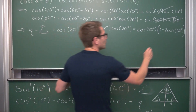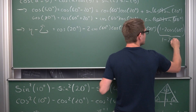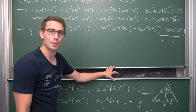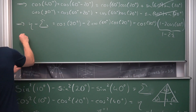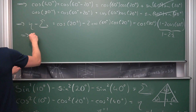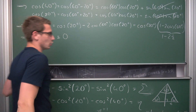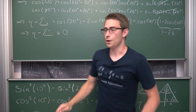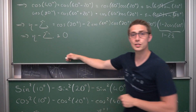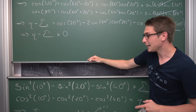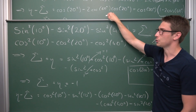Plugging cosine of 60 degrees equals one half into our expression gives one minus two times one half, which is one minus one equals zero. This means eta minus sigma equals zero, and therefore eta equals sigma — those two expressions have the very same value.